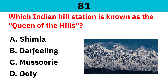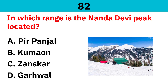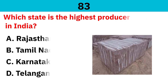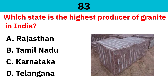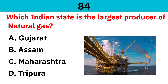Which Indian hill station is known as the Queen of the Hills? Correct answer is Darjeeling. In which range is the Nanda Devi Peak located? Correct answer is Garhwal. Which state is the highest producer of granite in India? Correct answer is Tamil Nadu. Which Indian state is the largest producer of natural gas? Correct answer is Gujarat.